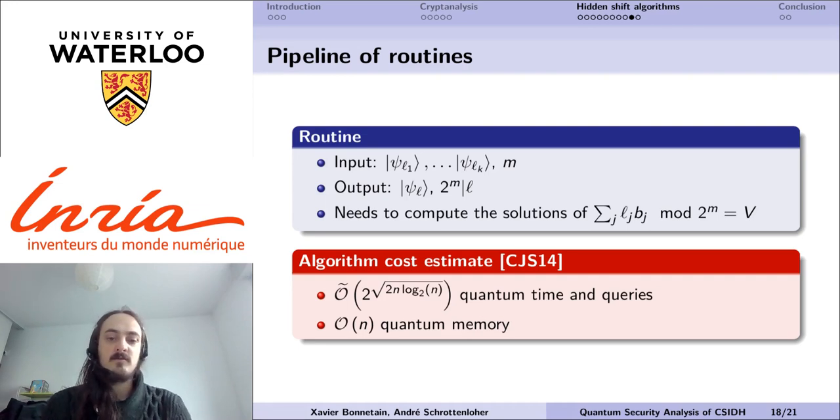This algorithm has been estimated by Childs, Jao and Soukharev, and they obtained an asymptotic cost in 2 to the square root of 2n log of n, which is worse than the previous asymptotic estimates, but it gains in the fact that we use only a linear amount of quantum memory.